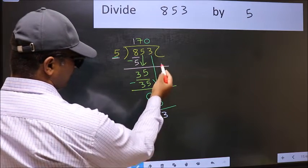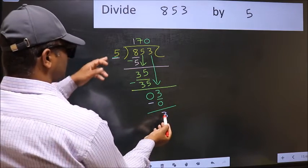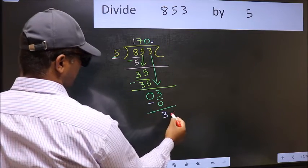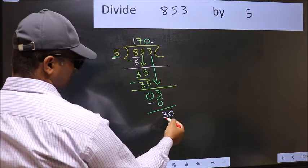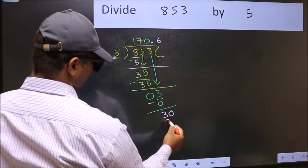Over here, we did not bring any number down. And 3 is smaller than 5. So now we can put dot and take 0. So 30. When do we get 30 in 5 table? 5 times 6, 30.